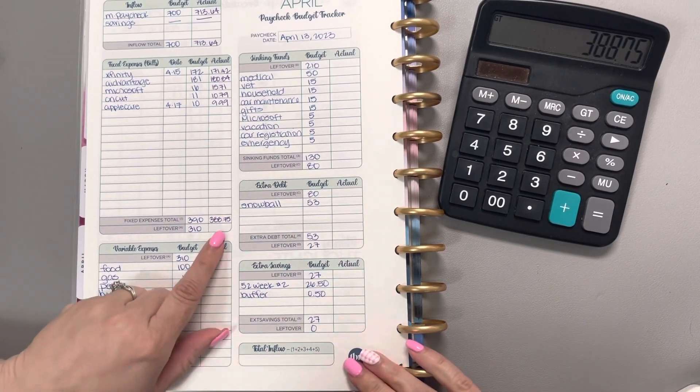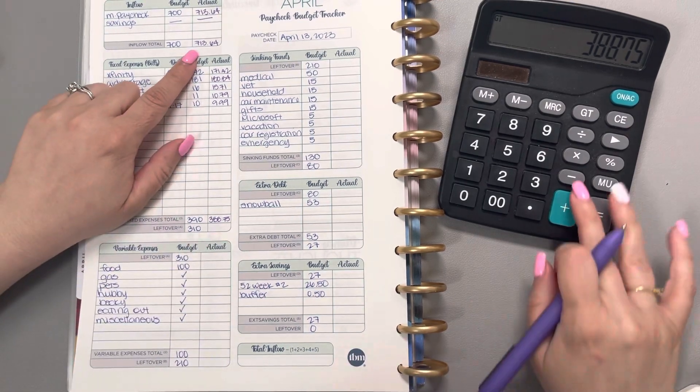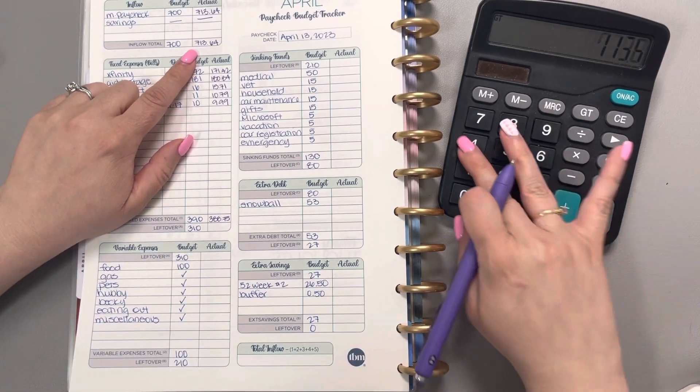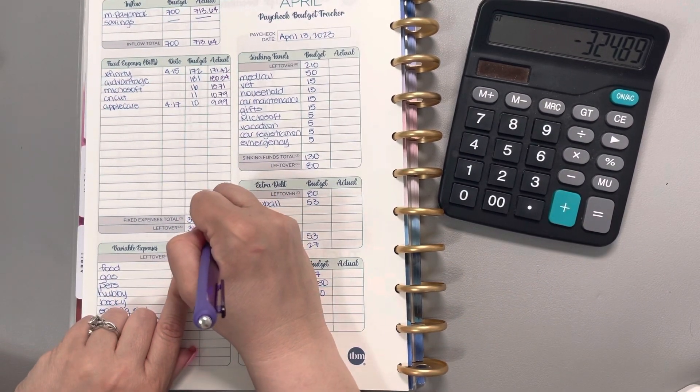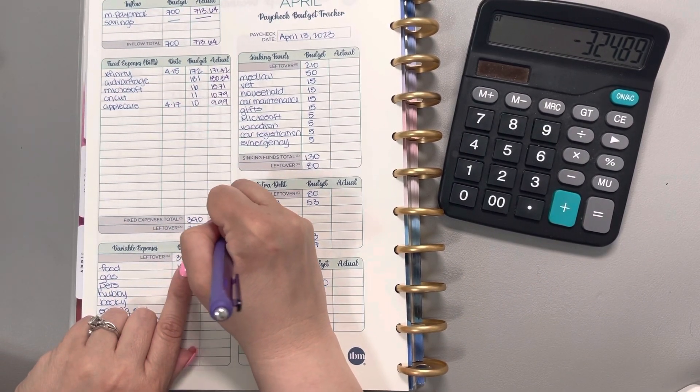When you take $388.75 away from $713.64, we end up with a leftover of $324.89.